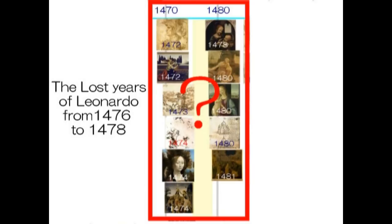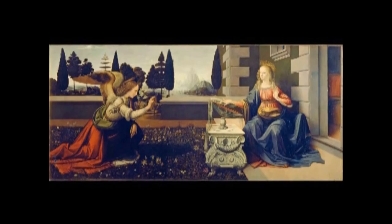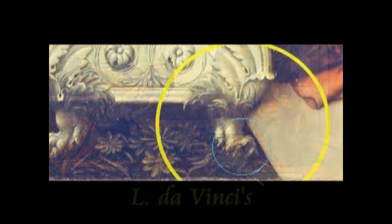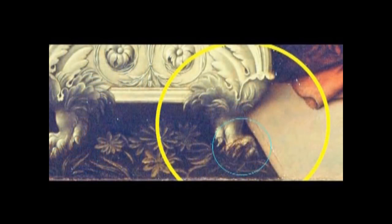例えば、こんなこともあります。これはダ・ヴィンチが1472年に描いたとされる受胎告知の絵です。向かって右側の女性の下、絨毯の下に3本指の足が描かれています。矢印で示したところです。